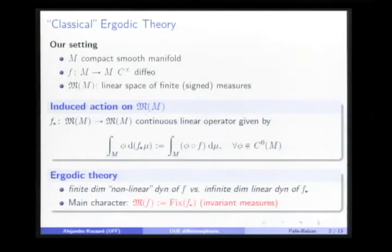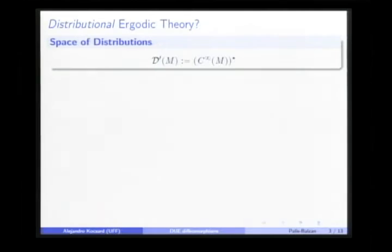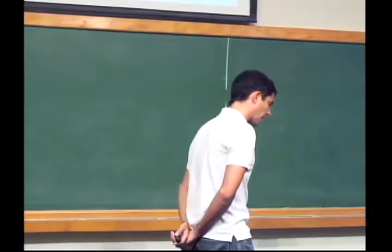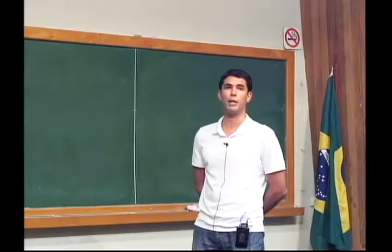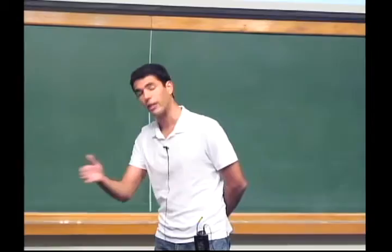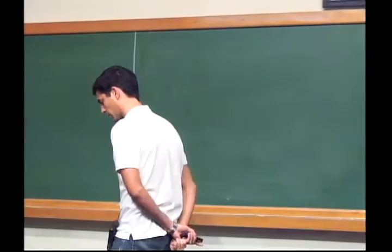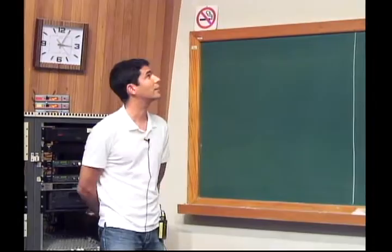They are not only measures; in fact we can talk about distributions, which are nothing but linear functionals on the space of smooth real functions. In any analysis course we learn that this space contains the space of measures — if we consider the space of finite signed measures identified with the dual space of continuous real functions on the manifold, we have this inclusion. In general, the space of distributions is much bigger than the space of measures.